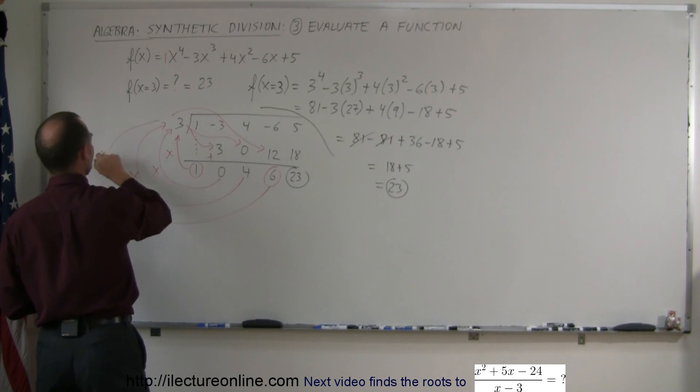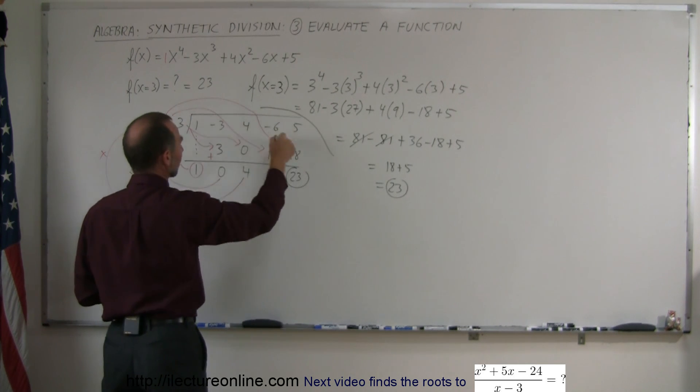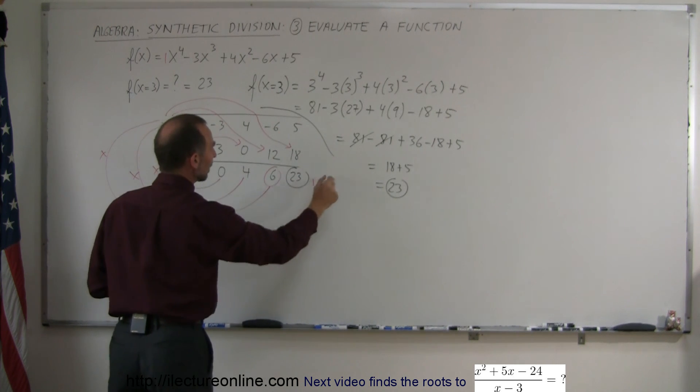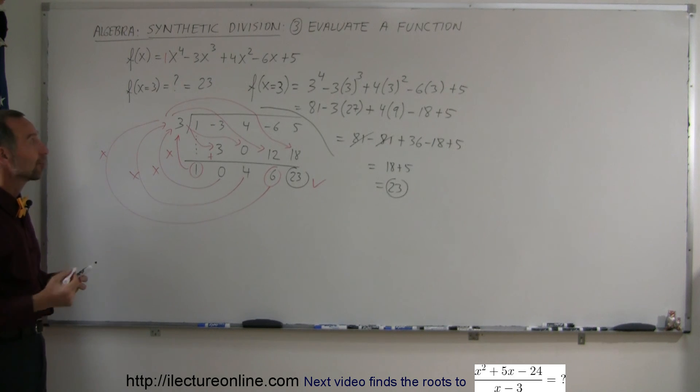6 times 3 gives you 18. Add it together, you get 23. That was the correct answer for the evaluation of the function. And that's how you do synthetic division when you evaluate a function.